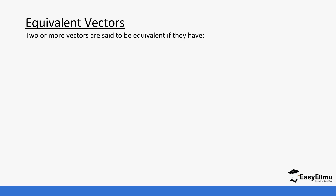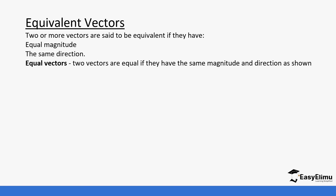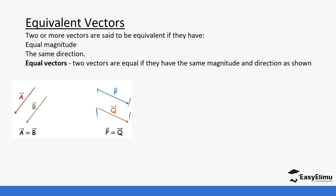Vectors that are equivalent are said to be equal. If they are equal, it means they have the same magnitude and the same direction. For example, when you look at vector A and vector B, they are moving in the same direction and their sizes are equal, so we say they are equivalent. Similarly, vectors P and Q are moving in the same direction and their magnitudes are the same, so vector P and vector Q are equivalent.